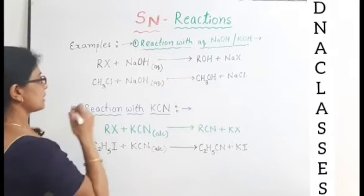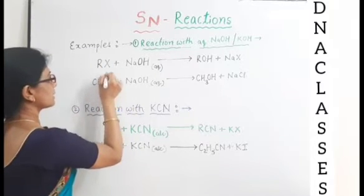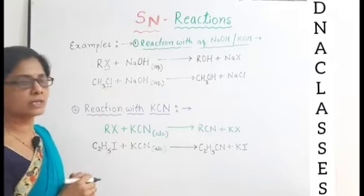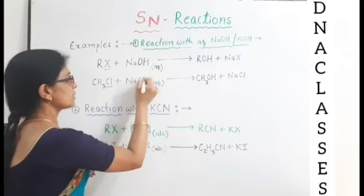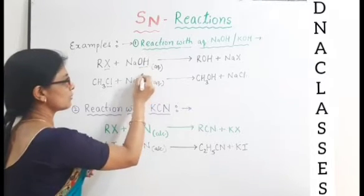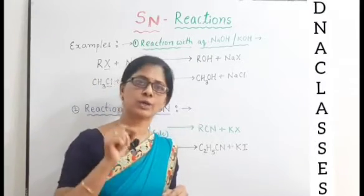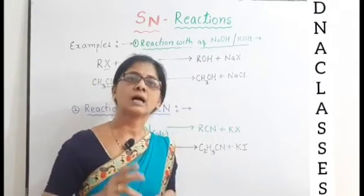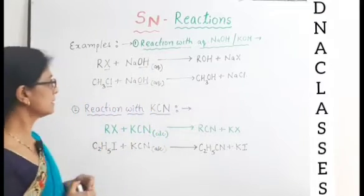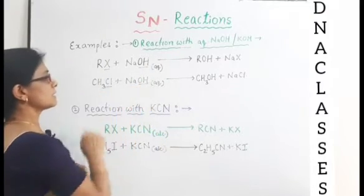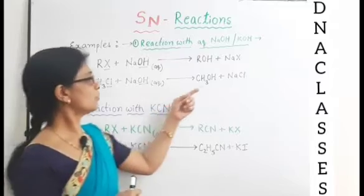Dekhiye, ismein yeh jo halide part hai, yeh jo halogen wala part hai, it is substituted by the nucleophile. Aur yahaan par hamara jo nucleophile hai, that is OH minus ion. Hydroxyl ion displaces the Cl ion and forms alcohol.